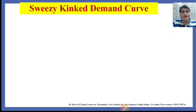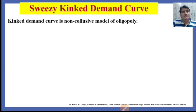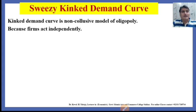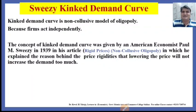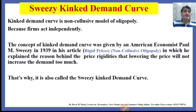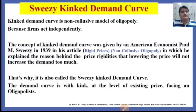What is the Sweezy Kinked demand curve and why is this demand curve called kinked? The Kinked demand curve is a non-collusive model of oligopoly because each firm acts independently. The concept of the Kinked demand curve was given by American economist Paul M. Sweezy in 1939 in his article called 'Rigid Prices, Non-Collusive Oligopoly', in which he explained the reason behind price rigidities — that lowering the price will not increase demand too much if the firm decides to decrease price. That is why it is called the Sweezy Kinked demand curve. The demand curve is kinked at the level of the existing price facing an oligopoly.